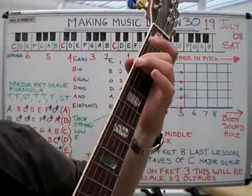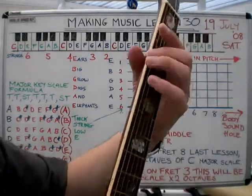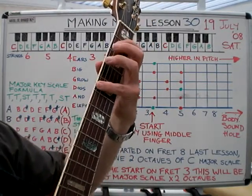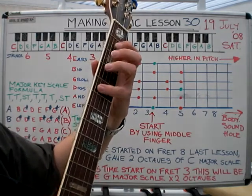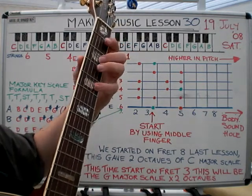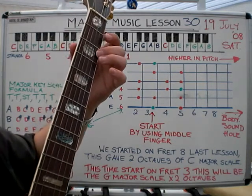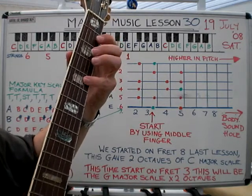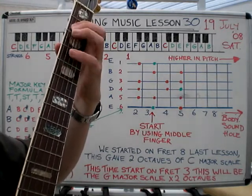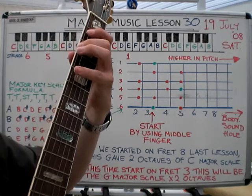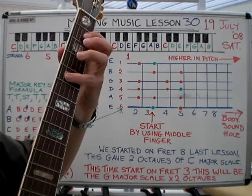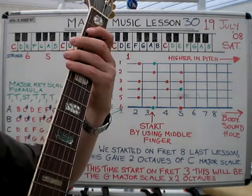Let's go to the G. Third fret. So we've got: G A B C D E F sharp G, A B C D E F sharp G. You can practice coming backwards too: G F sharp E D C B A G, F sharp E D C B A G. That's forwards and backwards.